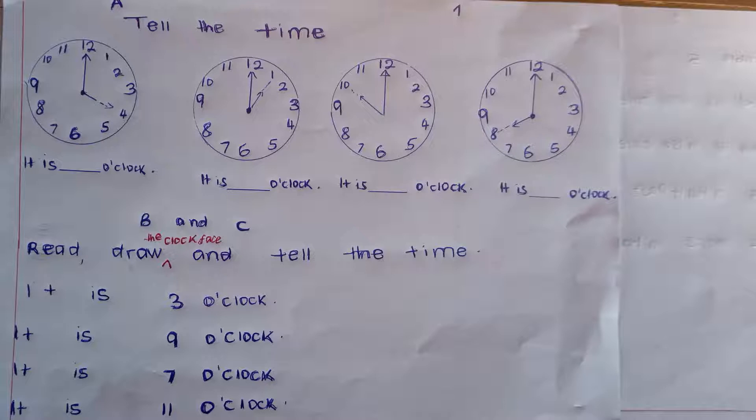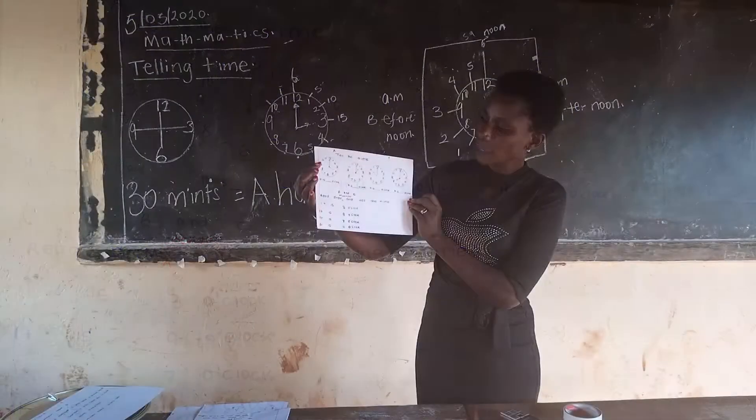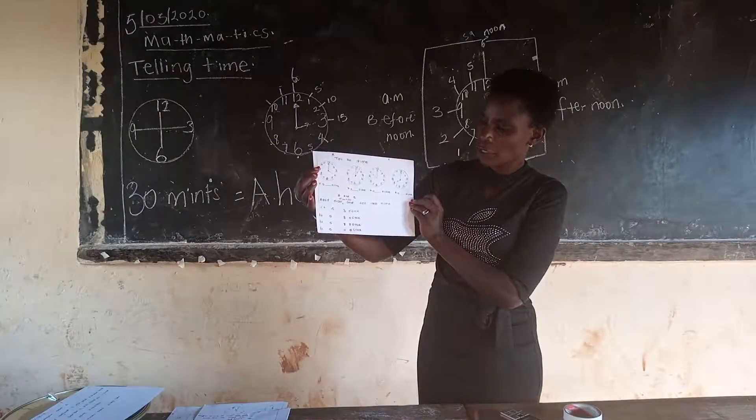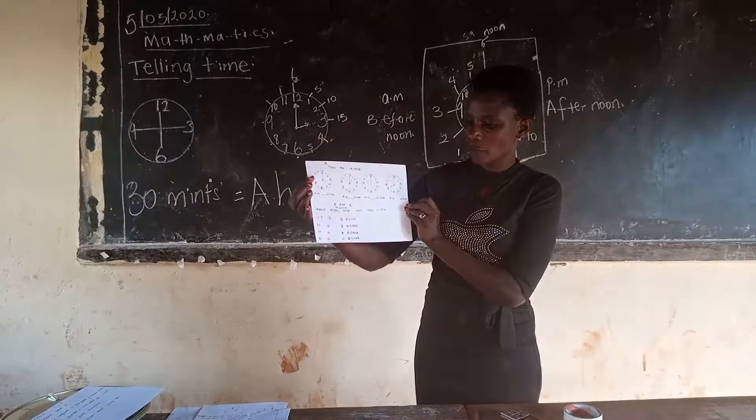The long hand should be in 12 for number 1, and the short hand should be in 3. Number 2, the long hand should be in 12 and the short hand should be in 9. Number 3, the long hand should be in 12 and the short one in 7. And lastly, the long hand should be in 12 and the short one in 11. Thank you very much for marking yourselves.